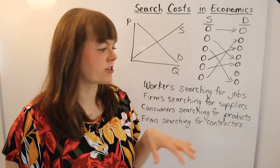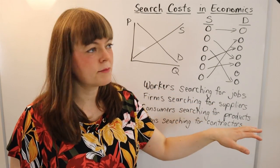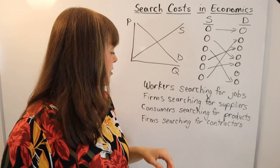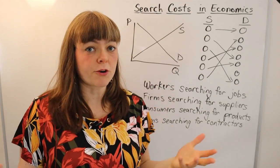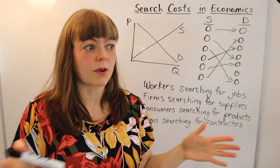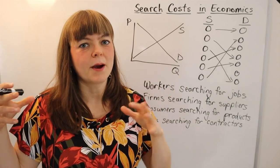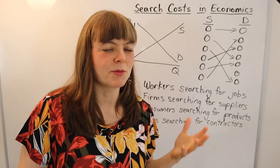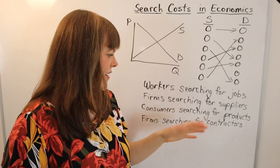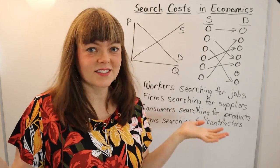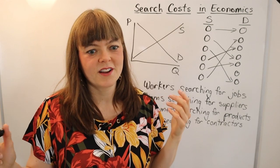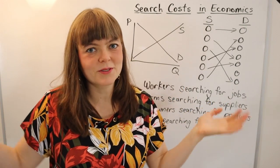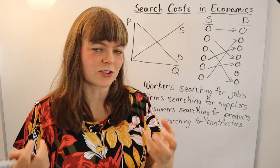The classic example is workers searching for jobs, where workers are the suppliers of labor and employers are demanding labor. But you can also have firms searching for suppliers — like which brand of butter should a restaurant use — or consumers searching for products, like on Amazon trying to find the best notebook. Customer reviews help with that search.